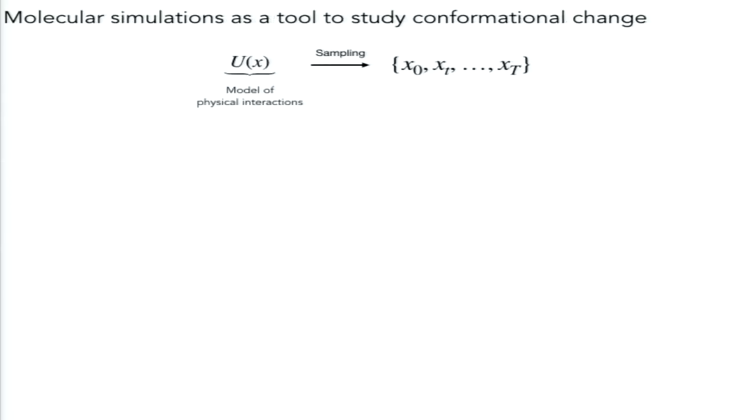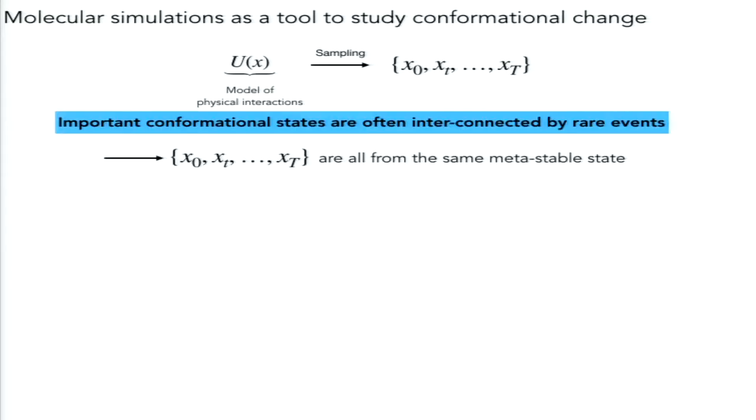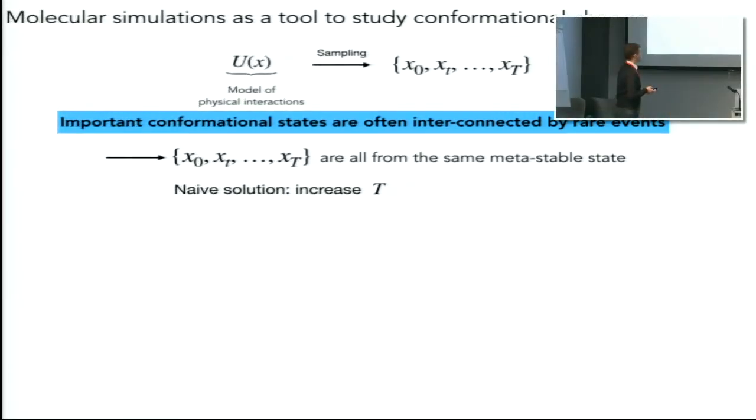The typical approach that we use in biological systems is that we have a model, typically a classical model of the physical interactions, and we do some simulation. We sample for some finite time with a molecular dynamics simulation. The problem is that the states we are interested in studying are interconnected by rare events, so typically we only have all configurations from the same meta-stable state, so we're not really sampling the process we're interested in studying. The naive solution is just to increase the time of your simulations. The problem is this is a brute force solution, it's expensive and not very efficient.